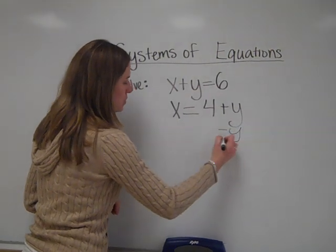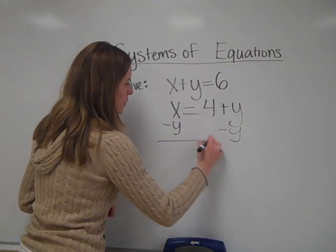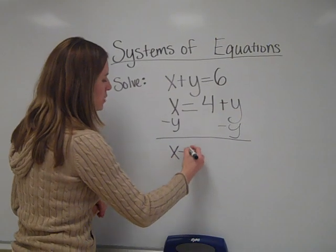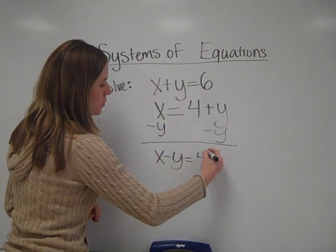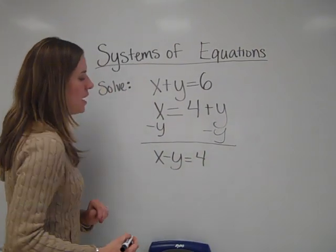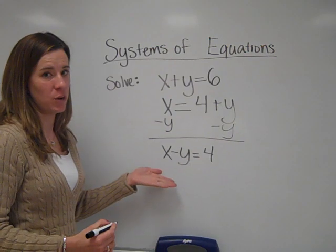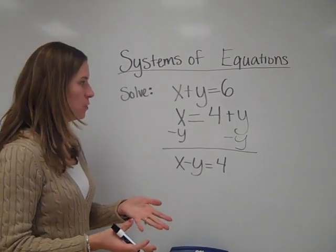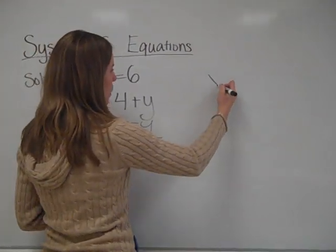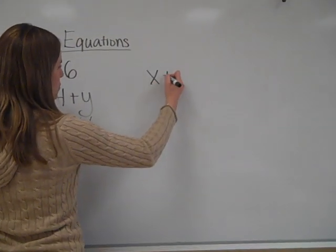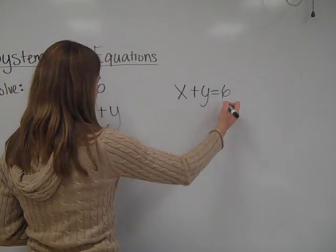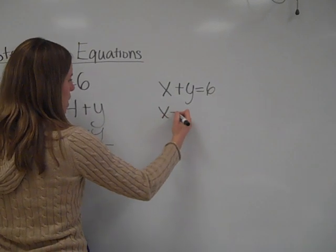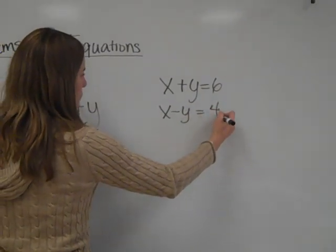So I'm going to subtract y from both sides. By doing so, I get x minus y is equal to 4. Now I'm going to rewrite both of my equations to make sure that I have all of my columns completely lined up. So I'm going to have x plus y equals 6, and my new equation, x minus y, is equal to 4.